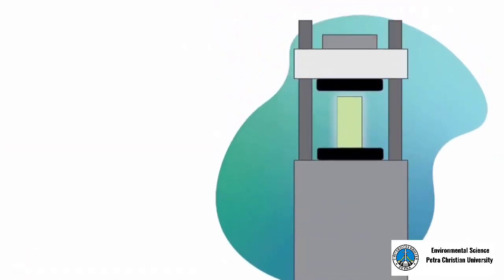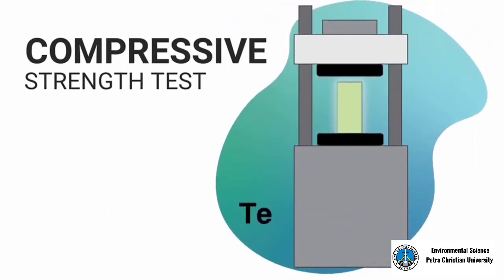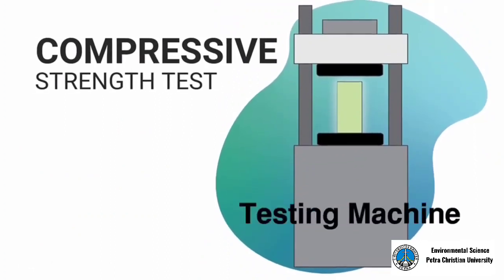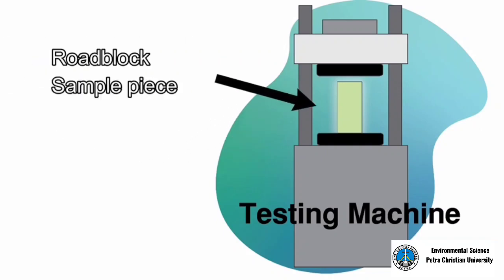The concrete compressive strength test is the mechanical test measuring the maximum amount of compressive load the material can bear before fracturing. The test piece in this case is the glow-in-the-dark concrete in the form of roadblocks, which is compressed between the buttons of a compression testing machine by a gradually applied load.